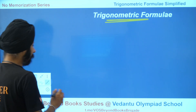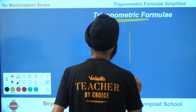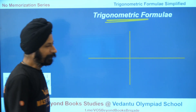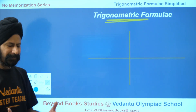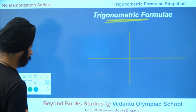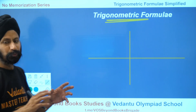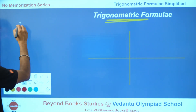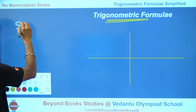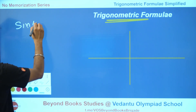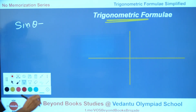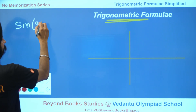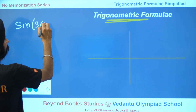Let's try one more — you can do it yourself, then you will learn. Let's take 360 minus theta. So let's take sine of 360 minus theta. And again, you can do the same trick with cos theta and tan theta — this is all your homework. So I'm saying, sine of 360 minus theta — I don't remember, so what do I do? No problem.